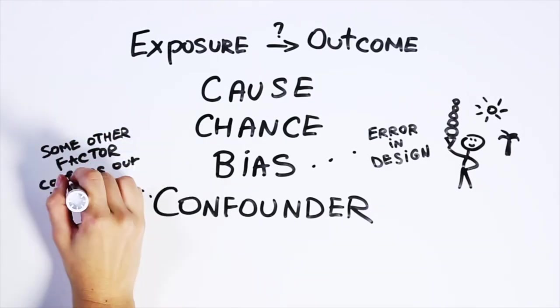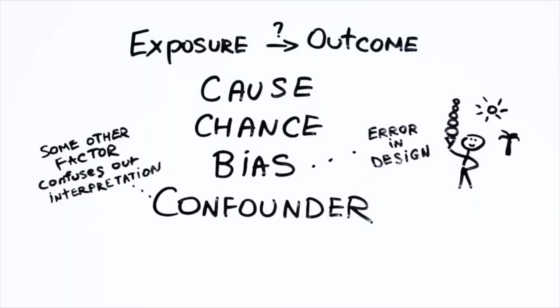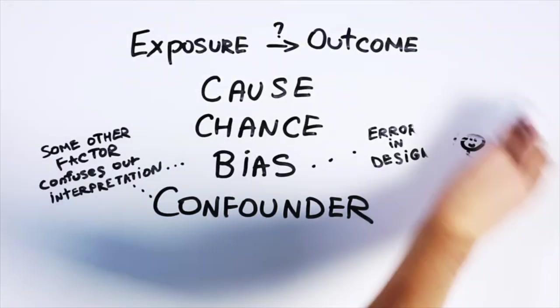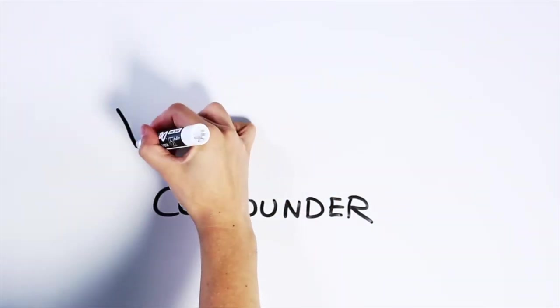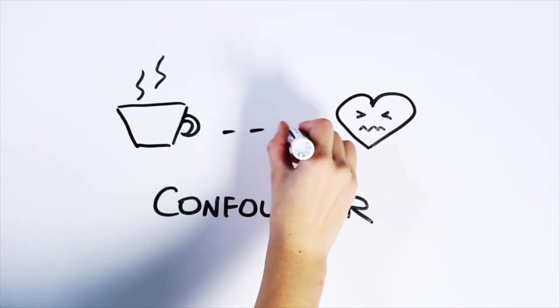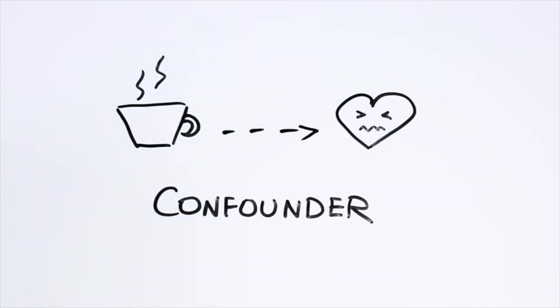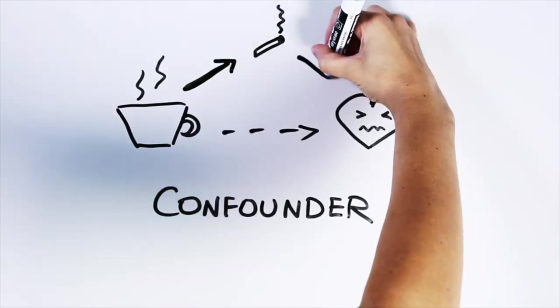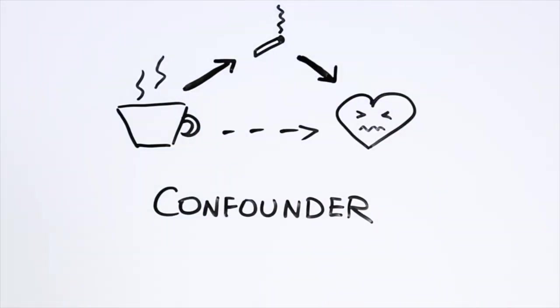Confounding, on the other hand, is where other factors confuse our interpretation of exposure and outcome. For example, imagine a study that suggests people who drink more coffee are more likely to develop heart disease. It'd be tempting to conclude that coffee causes heart disease, but people who drink coffee also tend to smoke. In this case, smoking is a confounder. Since it is associated with both drinking coffee and heart disease, it can make it seem that coffee causes the condition if we don't take smoking into account.